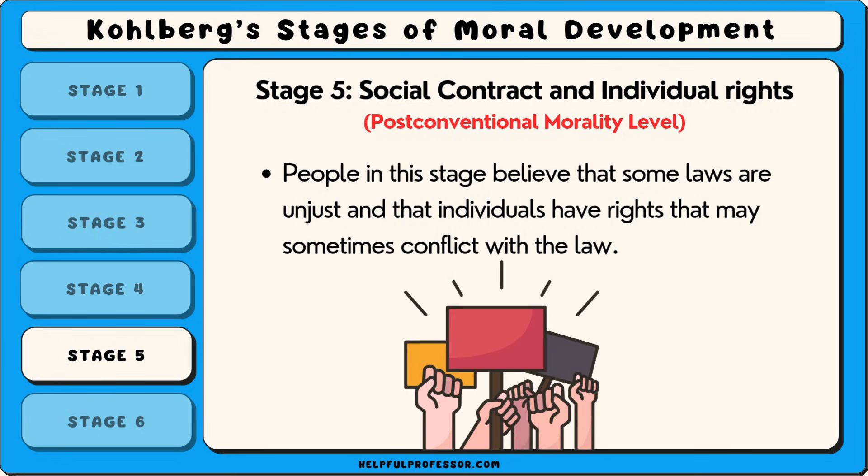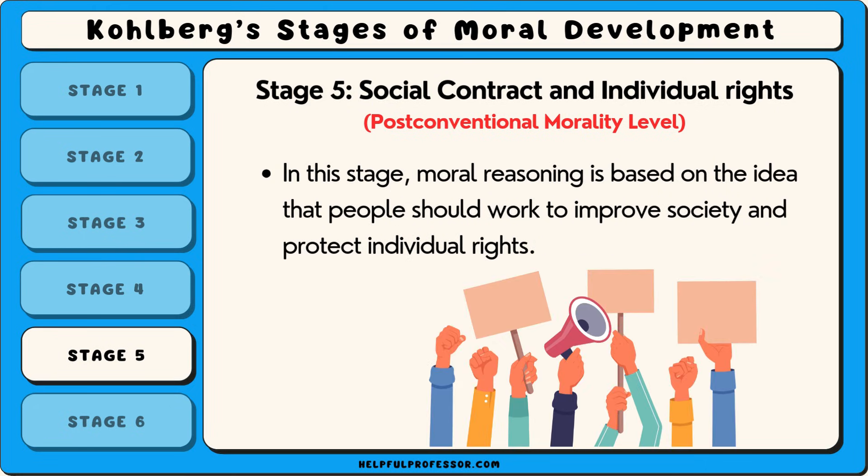For example, a person might support the right to protest even if it means breaking certain rules, because they believe that freedom of speech is a fundamental human right. In this stage, moral reasoning is based on the idea that people should work to improve society and protect individual rights.